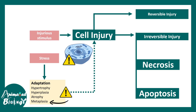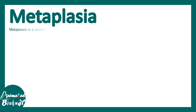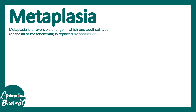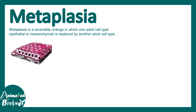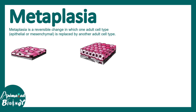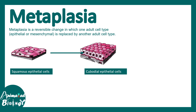In this video we will talk about metaplasia. Metaplasia is a reversible change in which one adult cell type — for example an epithelial cell or a mesenchymal cell — is replaced by another adult cell type. For example, squamous epithelium may get converted into columnar or cuboidal epithelium. This kind of change is known as metaplasia.